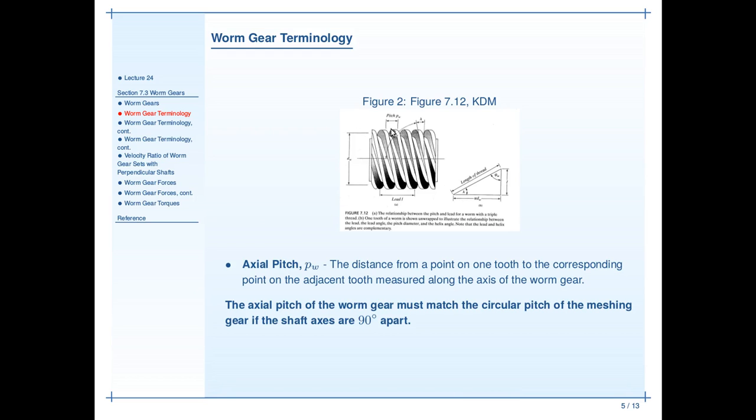You're measuring from a point on one tooth to the corresponding point on the next. The axial pitch of the worm gear must match the circular pitch of the meshing gear if the shaft axes are 90 degrees apart. This, of course, points something out. The shaft axes on a worm gear system do not have to be 90 degrees apart. In most cases they are, but they do not have to be.